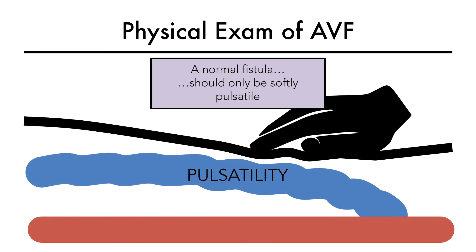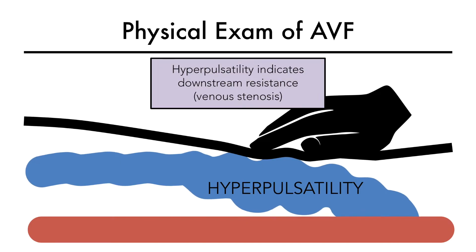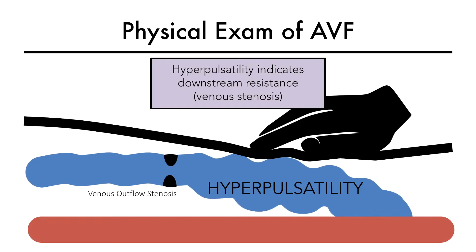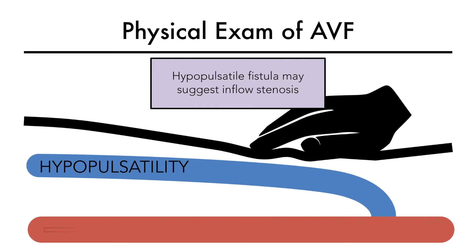Moving on to the third component: pulsatility. A normal fistula should only be softly pulsatile. Hyperpulsatility indicates downstream resistance. Hyperpulsatility, or a new pulsatility along the vein, suggests the presence of venous outflow stenosis. A hypopulsatile, or flat fistula, may suggest inflow stenosis, which we will learn more about in the upcoming sections.